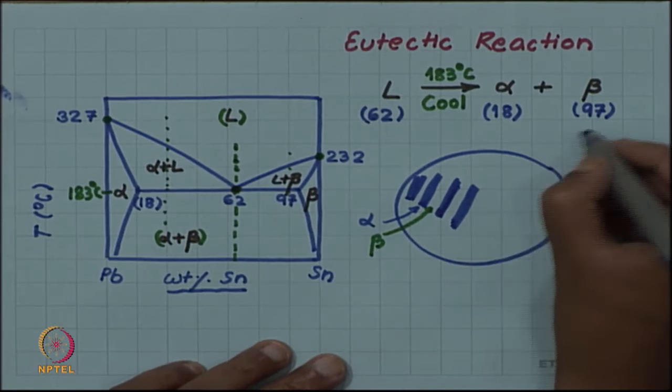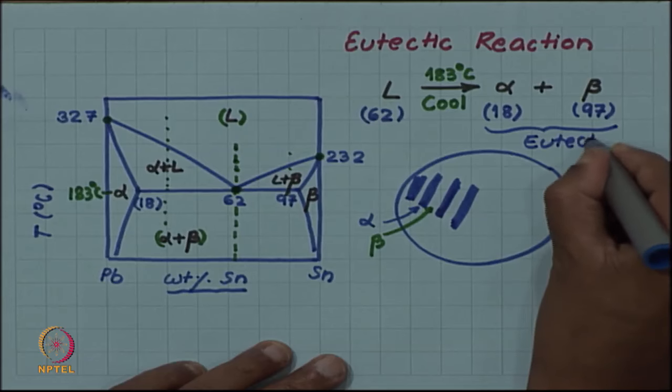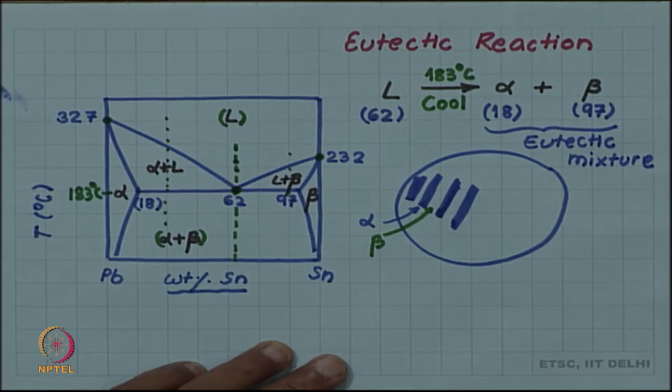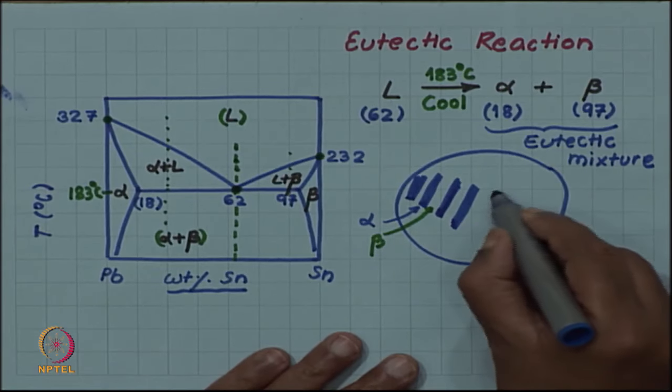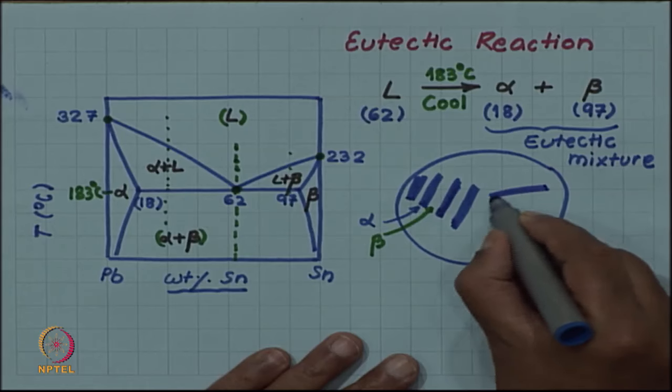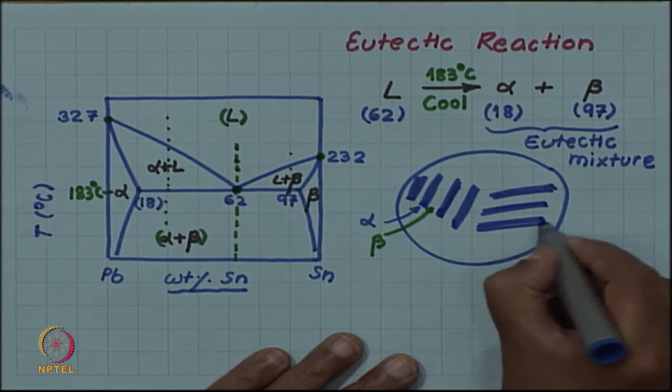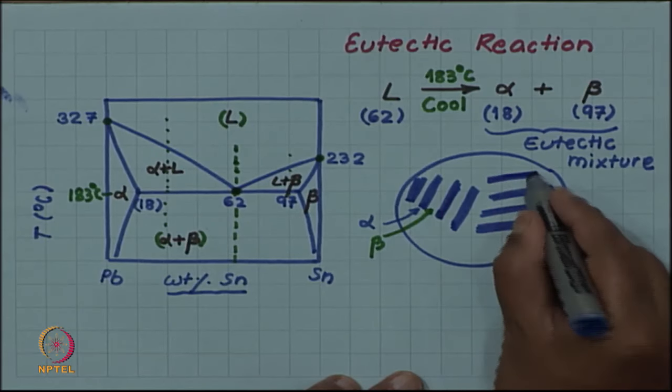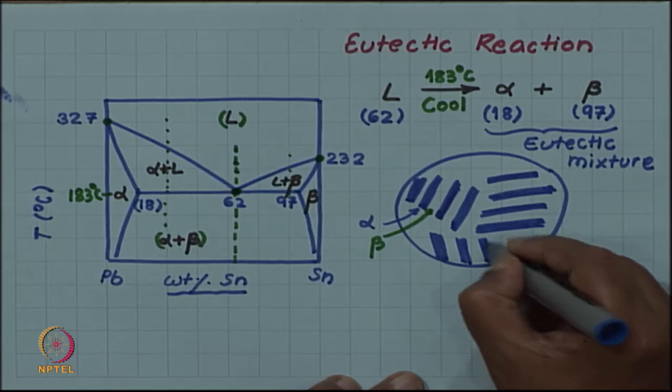This is called a eutectic mixture. And just like you had different orientation of crystals in an isomorphous system, here also in different region the alpha and beta plates will nucleate, but they will not have the same orientation. In some other region of the alloy again alpha and beta plates are there, but they are in a different orientation. Yet another region you have yet another orientation.